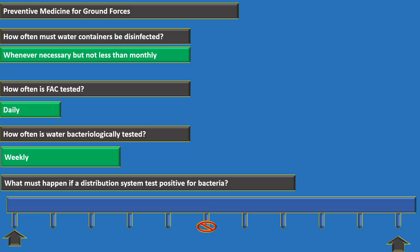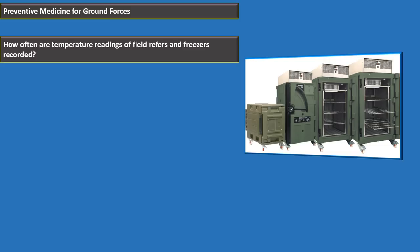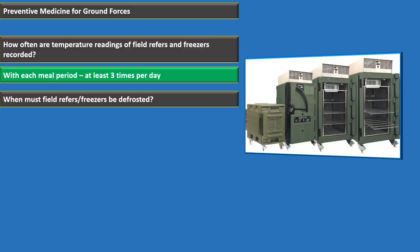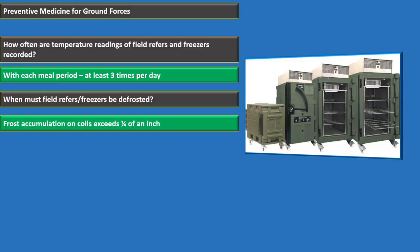Temperature readings on field refrigerators and freezers must be recorded with each meal period or at least three times per day. Field refrigerators must be defrosted when frost accumulation on the coils exceeds one-quarter inch. Field reefers must be held at 40 degrees or below.